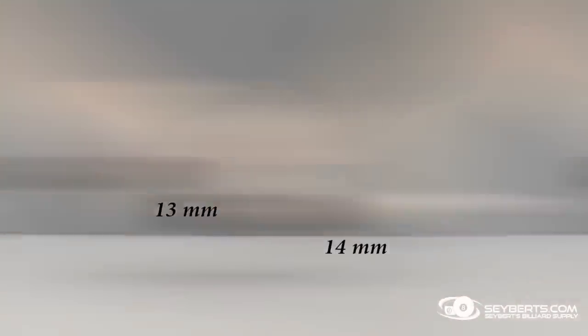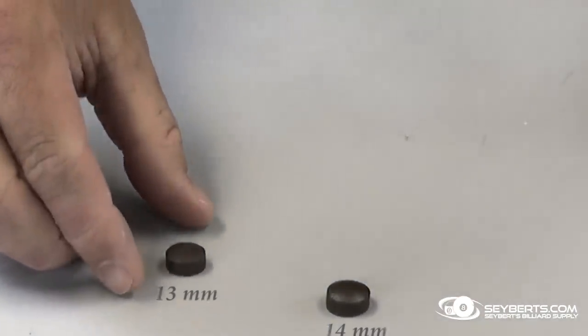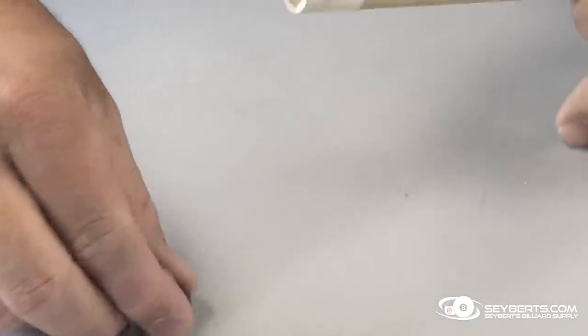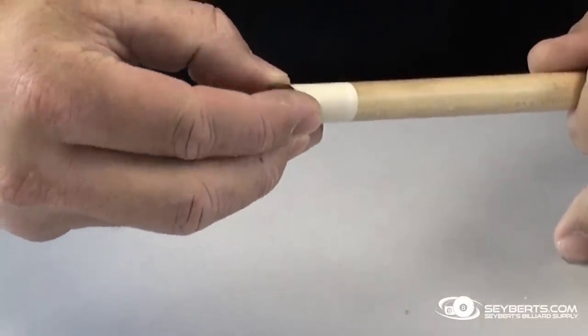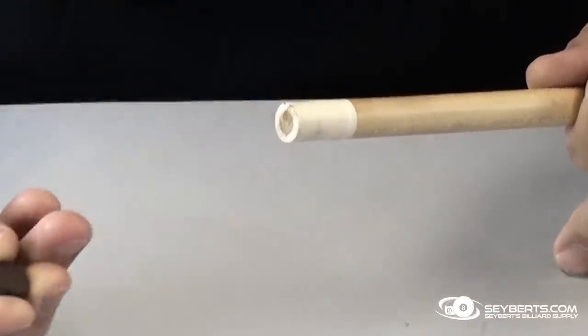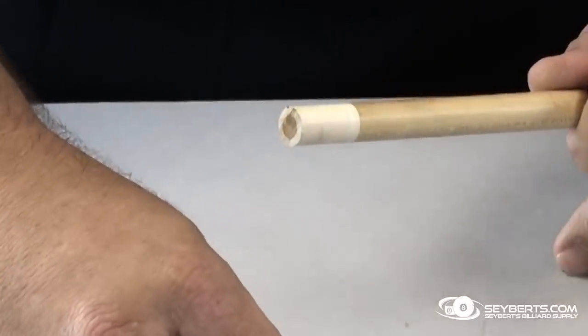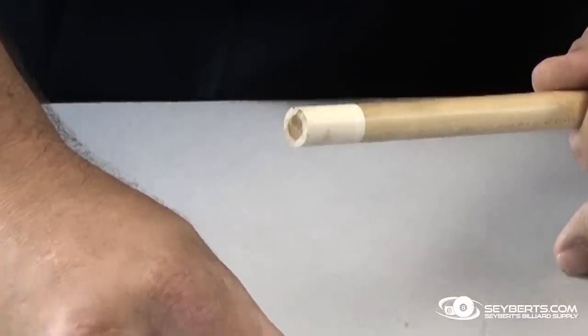When putting a tip on a 13-millimeter shaft, a lot of people think, well, I need a 13-millimeter tip. The problem with that is if you're lining up 13 millimeters to 13 millimeters and using this glue that we have in the kit, you only get one shot, and the odds of you lining that tip up perfectly is impossible.